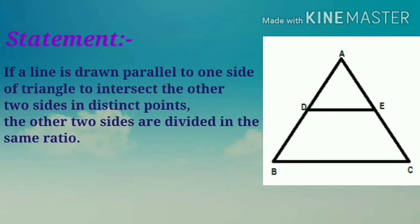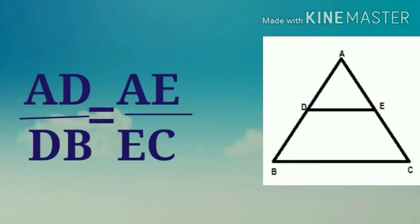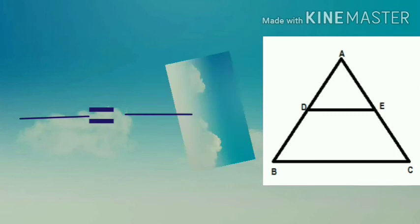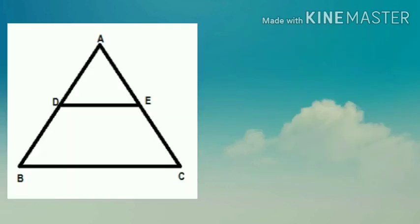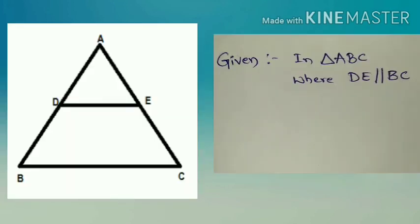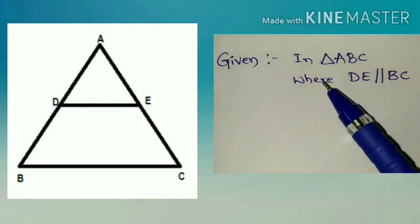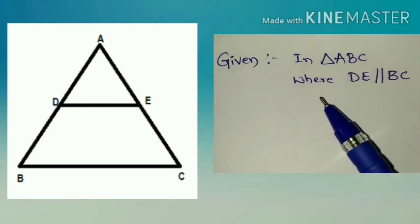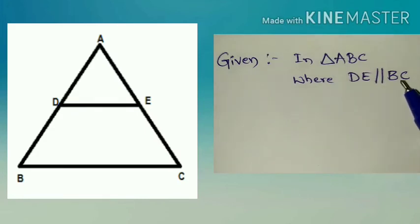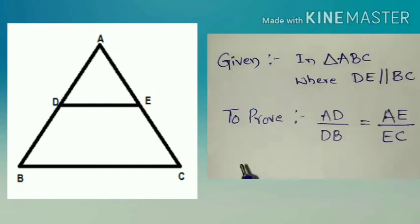Let's start with given: in triangle ABC where they given DE parallel to BC. To prove: AD by DB equal to AE by EC.